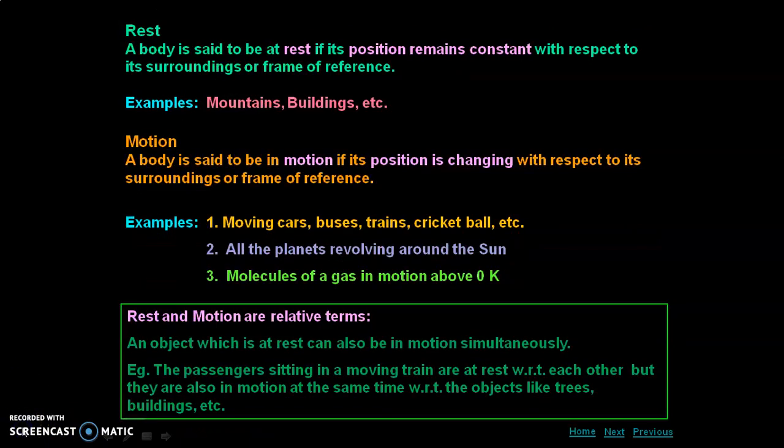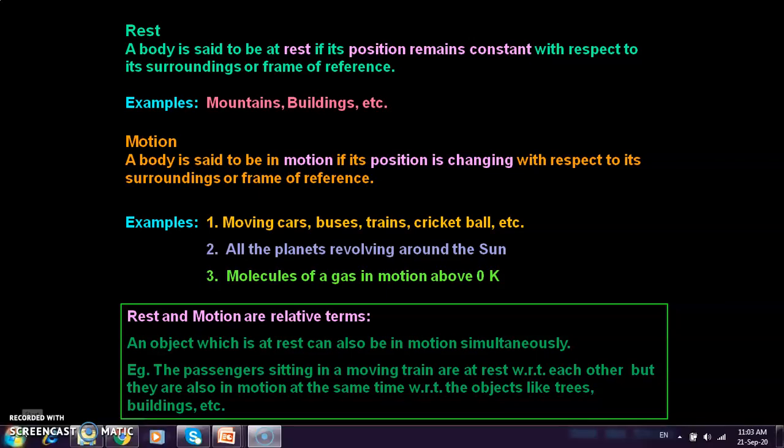Now let us define rest and motion. A body is said to be at rest if its position remains constant with respect to its surroundings and frame of reference. The frame of reference is basically the frame in which you are taking your observations. If in that frame the body is not changing its position coordinates, that body is said to be at rest. Examples include mountains and buildings.